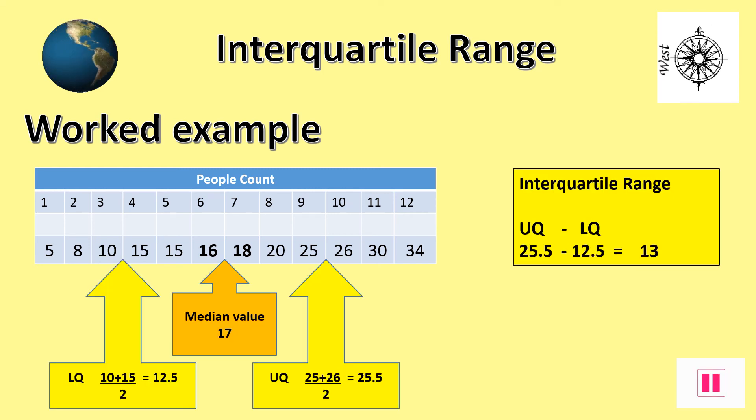To calculate the lower quartile value we use all the rank ordered numbers below the median value, in this case between 5 and 16. The answer is halfway between 10 and 15. To work out the answer we add the two numbers together and divide by 2. This gives us a lower quartile value of 12.5. To work out the interquartile range we will need to work out the upper quartile value which is 25.5. So the interquartile range is 25.5 minus the lower quartile value of 12.5 which gives us an answer of 13.